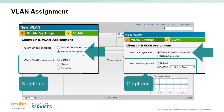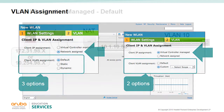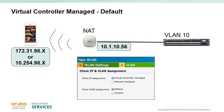The custom option allows various choices as to how and what DHCP server will be used. If you select virtual controller assigned and the default option, the client will receive an IP address from the IAP. In this example, the IAP gets a 10.1.10.56 address from the DHCP server and is in VLAN 10 on the switch. The user associates to the IAP and gets an IP address from the 172.31.98 subnet originating from the IAP. If this subnet conflicts with the network, the 10.254.98 subnet will be used. All user traffic is then NATted to the IAP's IP address. The virtual controller assigned option is typically used for guest access.